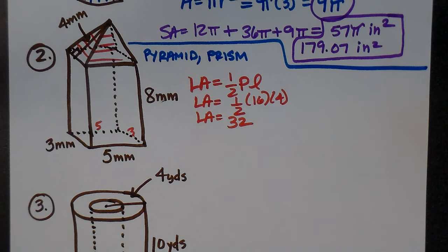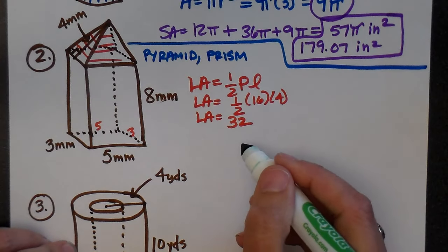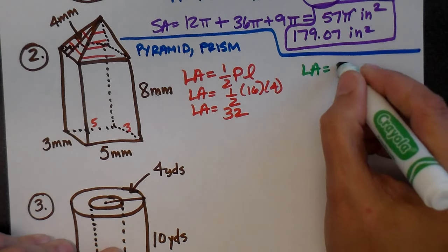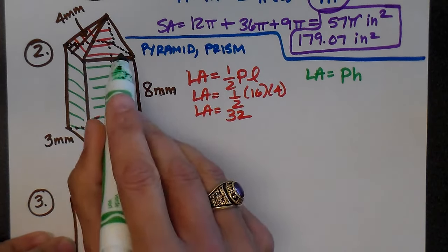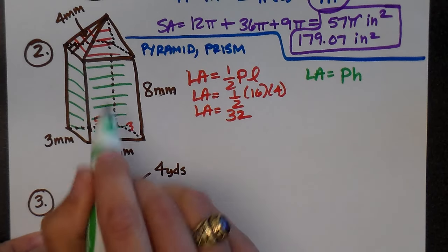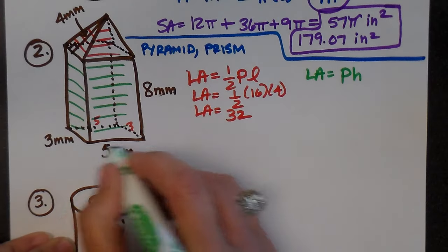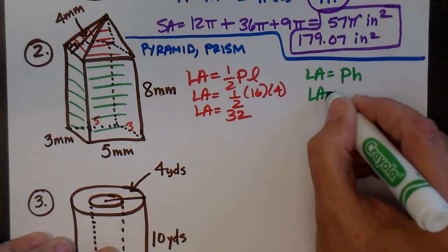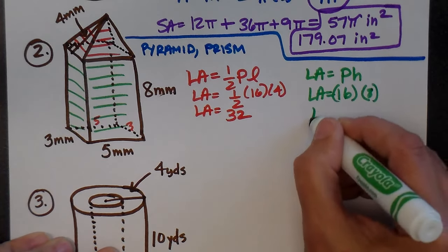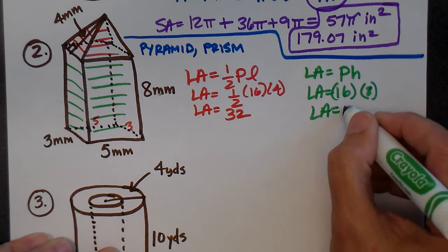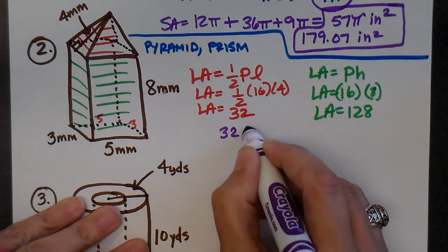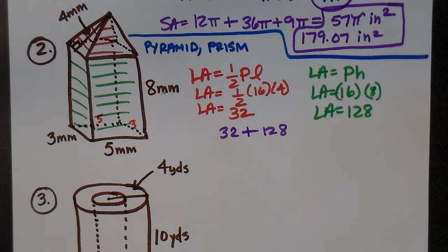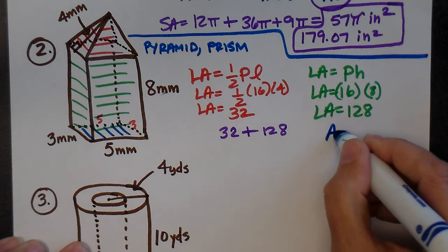Now for the rectangular prism — the formula for lateral area of a prism is perimeter times height. One base is not showing, so I'll find the lateral area first and then add the bottom base. The perimeter is 16 and the height is 8, so the lateral area is 16 times 8, which is 128.